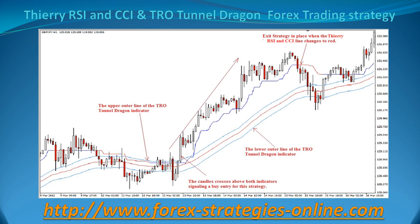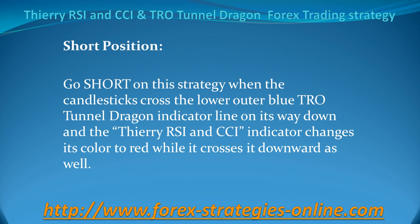The candles are seen surging past the upper outer line of the TRO Tunnel Dragon Indicator as well. As the Theory RSINCCI turns blue, the exit strategy for this system is triggered when the Theory RSINCCI line turns red.